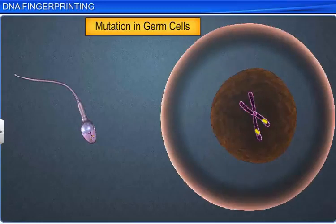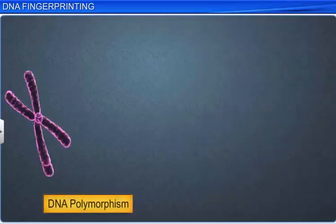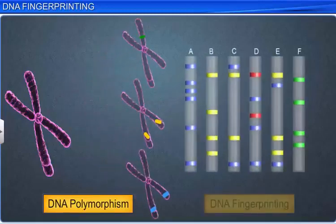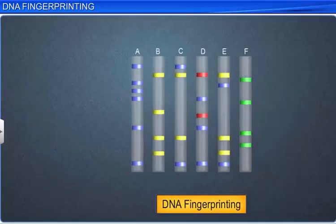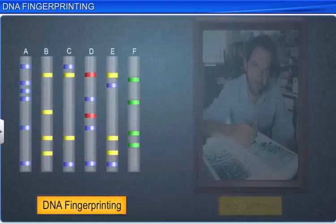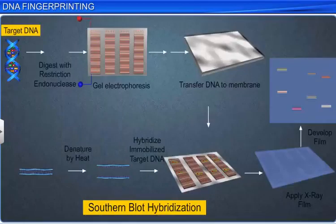DNA polymorphism is the guiding principle behind genetic mapping, and therefore helps in the DNA fingerprinting technique. The DNA fingerprinting technique was developed by Alec Jeffries. This technique involved southern blot hybridization, which used radio labeled VNTR as a probe.